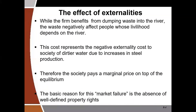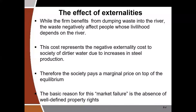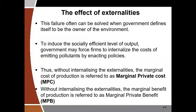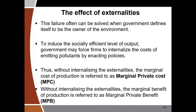How can government deal with externalities? One of the ways is to have well-defined property rights. If government defines who has the right to own a certain river, environment, or land, then firms cannot freely create externalities to those resources. The best way government can deal with the problem of externalities is to define itself as the owner of the environment, which forces firms to find ways to internalize the externalities.